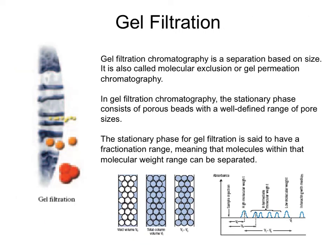Another method you'll see in the literature is gel filtration. Gel filtration chromatography essentially allows one to separate based on protein size or macromolecular size. It's also called molecular exclusion or gel permeation chromatography. The stationary phase consists of porous beads with a well-defined range of pore sizes, and it has a fractionation range, meaning molecules within a molecular weight range can be separated. You monitor absorbance as a function of what you're eluting out — larger sizes come out first, smaller sizes come out last.